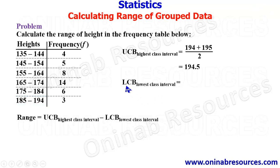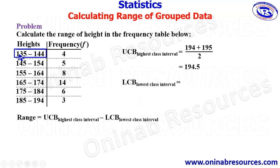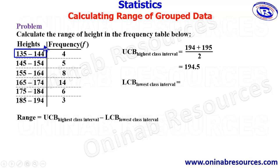We then find the lower class boundary of the lowest class interval. The lowest class interval is the first class interval. To calculate the lower class boundary, we look at the lower class limit there, which is 134. If we consider the class before this, its upper class limit would be 134, so the next value is 135. We find the average of 134 and 135 to get the lower class boundary.